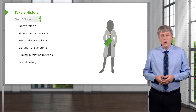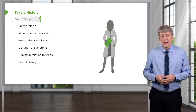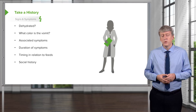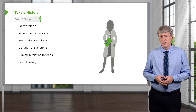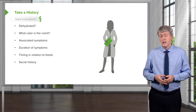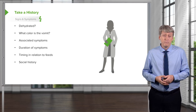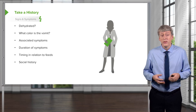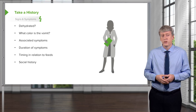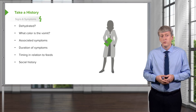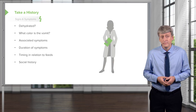Social history is always important and may give you clues as to what's actually going on. I recently saw a patient with vomiting where the cause turned out to be child abuse and blunt head trauma.